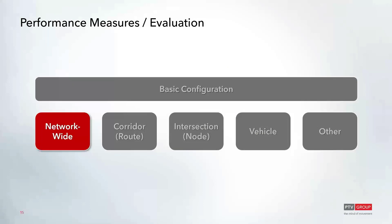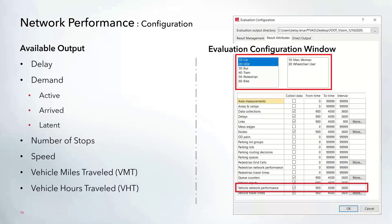Now we'll move into the different evaluation types, starting with some network-wide measures. Network performance within Vissim does not require any special object to be added — it just requires the vehicle network performance option to be selected and activated within the evaluation configuration window. Network performance takes into account vehicles already at their destination or that have left the network, as well as vehicles still in the network at the end of the evaluation interval. This provides results for overall network delay, speed information, stop information, active and latent demand.